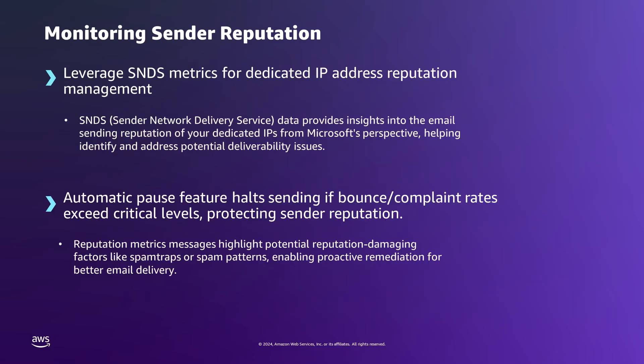Amazon SES leverages SNDS — Smart Network Data Services — a Microsoft-provided tool to monitor the reputation of dedicated IP addresses. SNDS provides key metrics such as spam rates, complaint rates, email acceptance percentages, and specific indicators like trap rates. By monitoring these indicators, we can identify potential issues early, such as unusually high spam rates or unexpected trap rates. This data enables proactive adjustments to sending practices, thereby helping maintain a positive sender reputation.